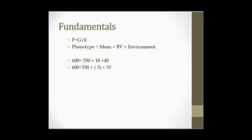The animal on top got there because he was genetically superior, and the animal at bottom because he benefited from a superior environment. Consequently, when we're selecting sires, we want to select those who are superior genetically, because it is their genetic contribution that will be passed from one generation to the next.